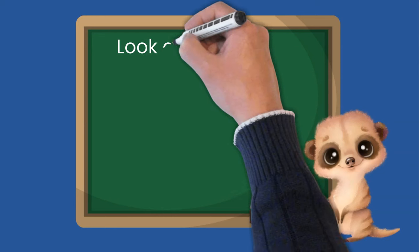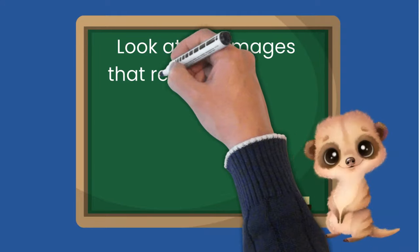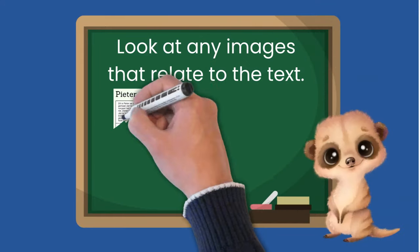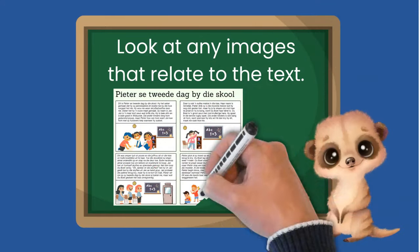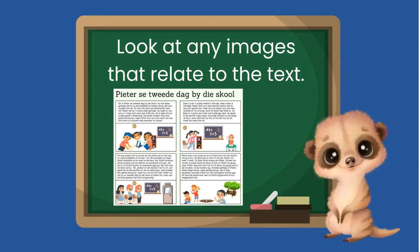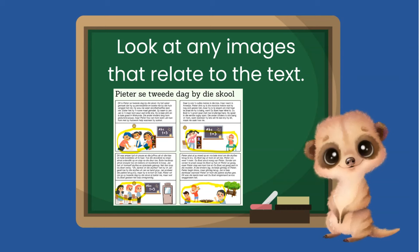You might not always get images with the text, but if you do, then have a look and see if you can tell what the text is about. In this case, you can see some children in the classroom, so we can assume that this story is something about school or friends and bullying if you have a look at the last image.